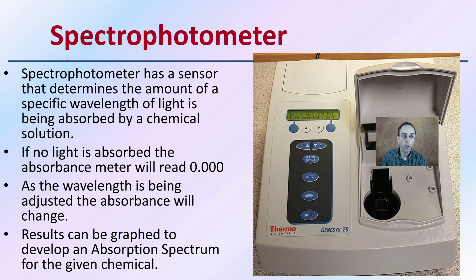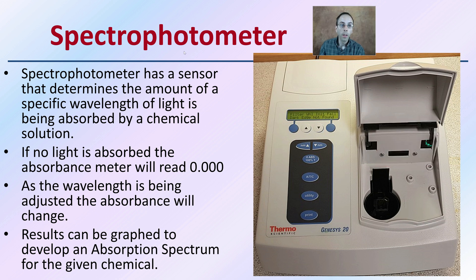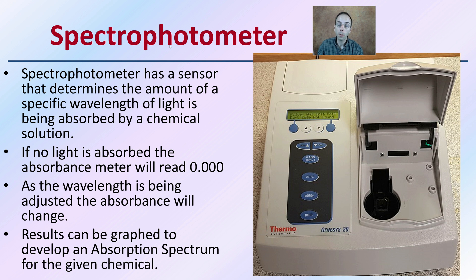This is an example of a spectrometer. They have sensors that determine the amount of a specific wavelength of light being absorbed by a chemical solution. If no light is absorbed, the absorbance meter will read 0.00. As the wavelength is being adjusted, the absorbance will also change, resulting in a difference in that absorbance reading.